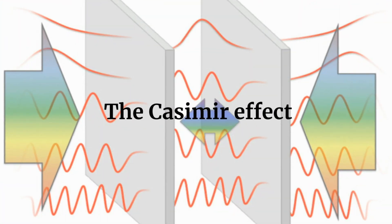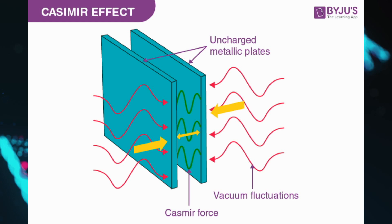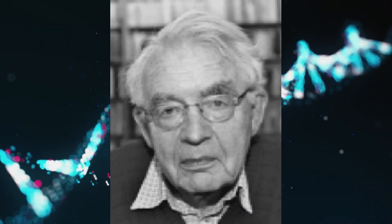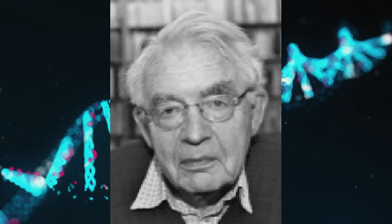The Casimir effect is a force that arises from quantum fluctuations of the electromagnetic field between closely spaced conductive plates. The Casimir effect is a small attractive force that acts between two close parallel uncharged conducting plates. It is caused by quantum vacuum fluctuations of the electromagnetic field. The effect was predicted by the Dutch physicist Hendrik Casimir in 1948.